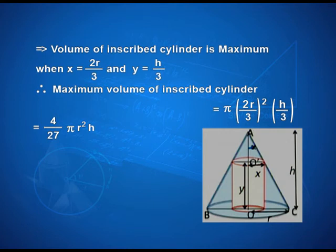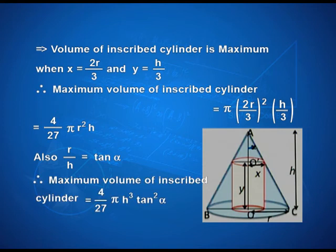We wanted to get an expression in terms of α. So, let's relate h and r in terms of α. Plain trigonometry tells us nothing but r/h is tan α. So, I can always replace r by h times tan α, and therefore, the maximum volume of inscribed cylinder turns out to be 4/27 π h³ tan² α, and that is exactly what the requirement of the question was.